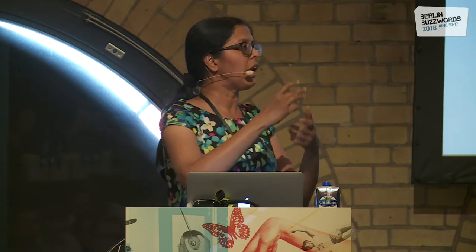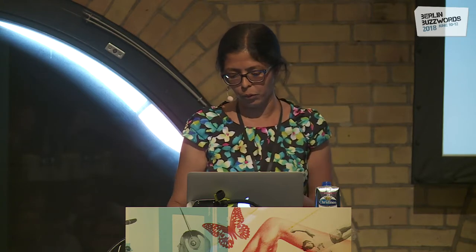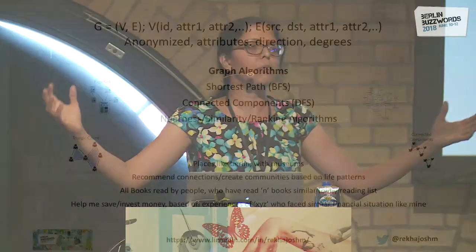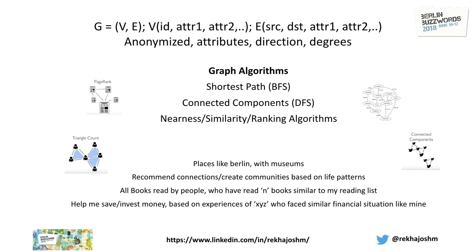Degrees refer to how many nodes go in and out — there's an in-degree and out-degree to every node. The whole concept of graph can be summed in two lines: G(V, E) and then the attributes. This is the whole distilled idea of a graph.